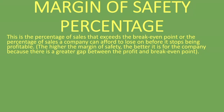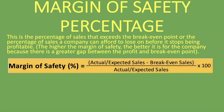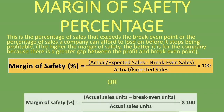The formula for calculating the margin of safety percentage is: actual or expected sales minus break-even sales, divided by actual or expected sales, multiplied by 100. Another way is to take actual sales units minus break-even units, divide by actual sales units, and multiply by 100. We're going to use the first formula, but you can use whichever one you find easier.